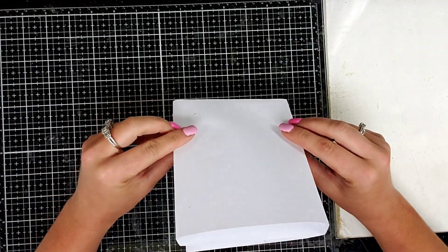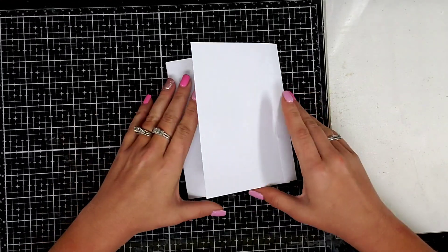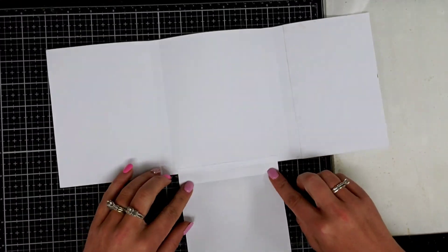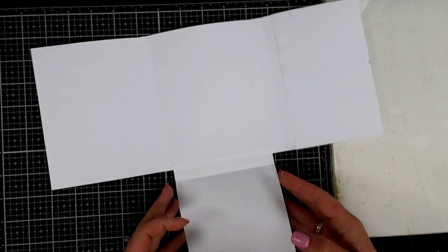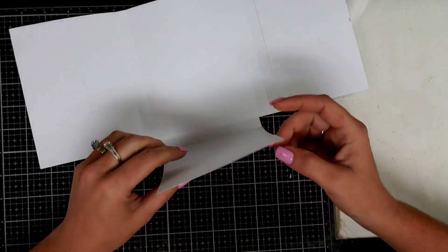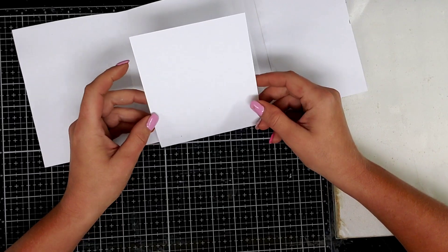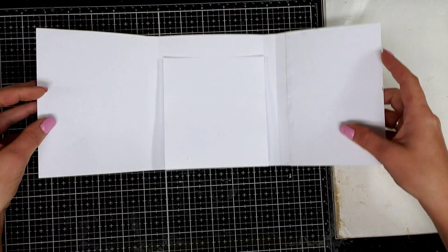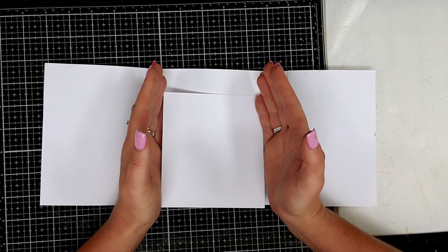And then what you do is you make your journal that goes in the middle. So you can decorate this piece after you put it on or before you put it on. That's totally up to you. And then you just make your journal - you just want it to fit in between here so it needs to be the proper size.